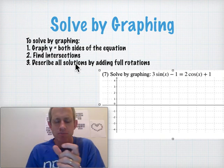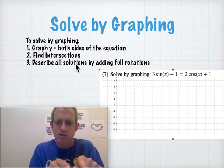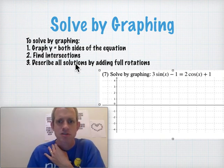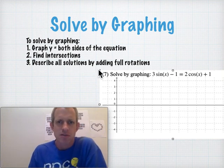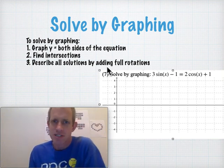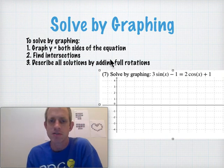You probably need to write them as a couple numbers plus full rotations to be able to describe all of the answers, usually like adding plus 360k or plus 2πk or something like that to the end.